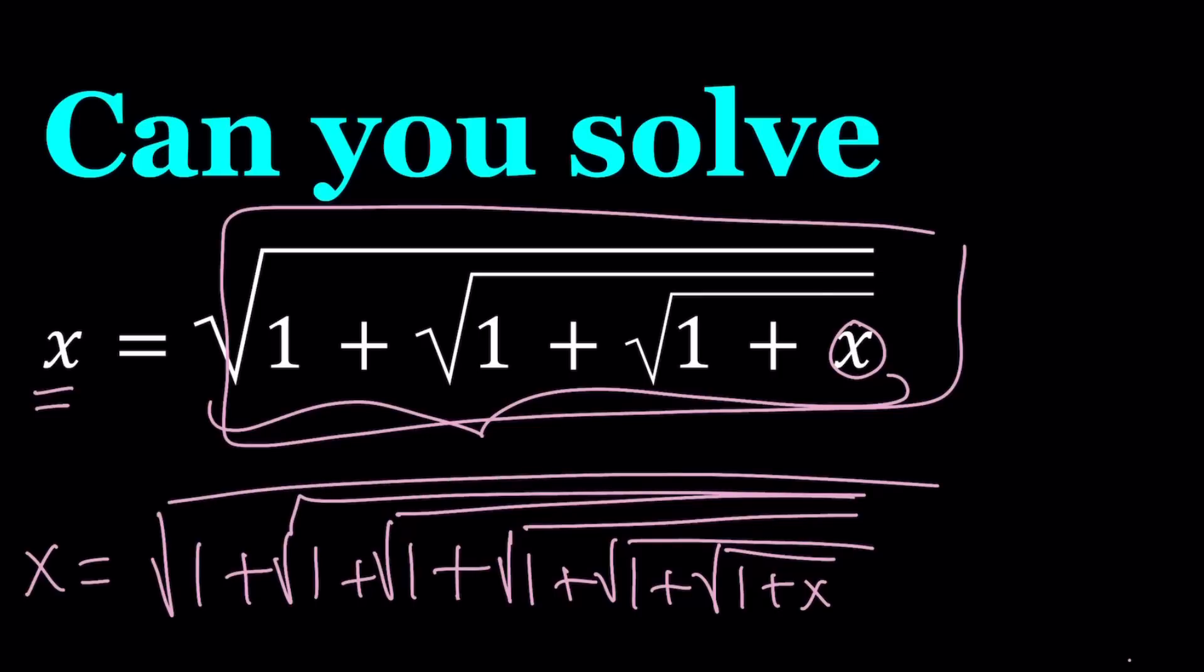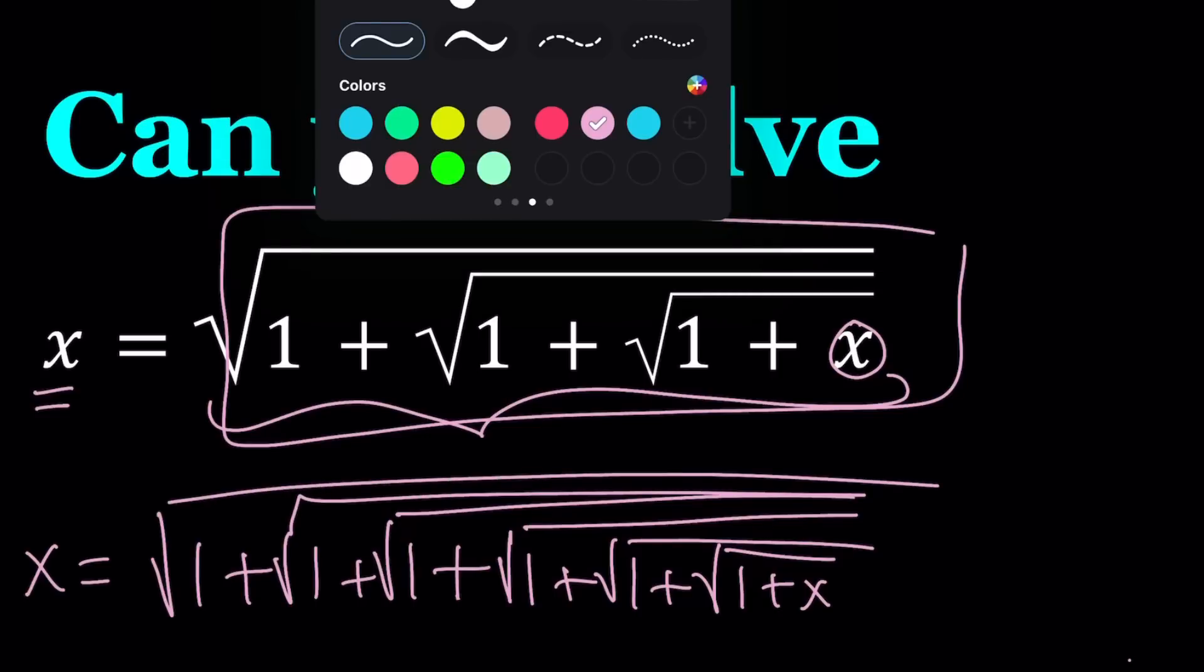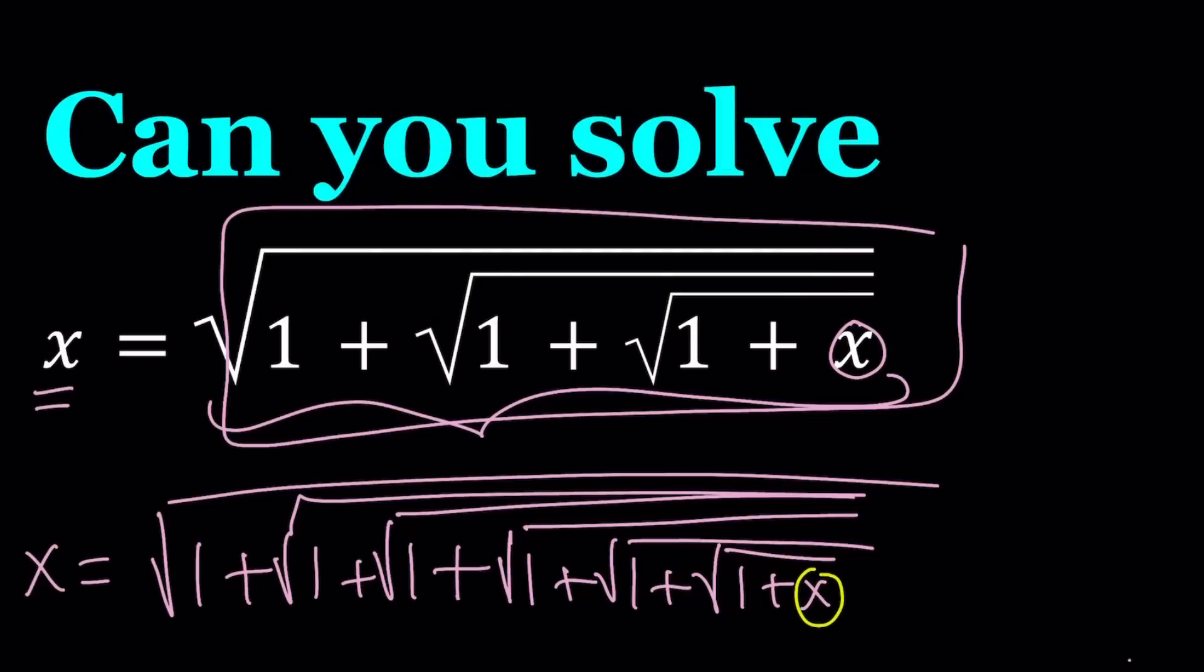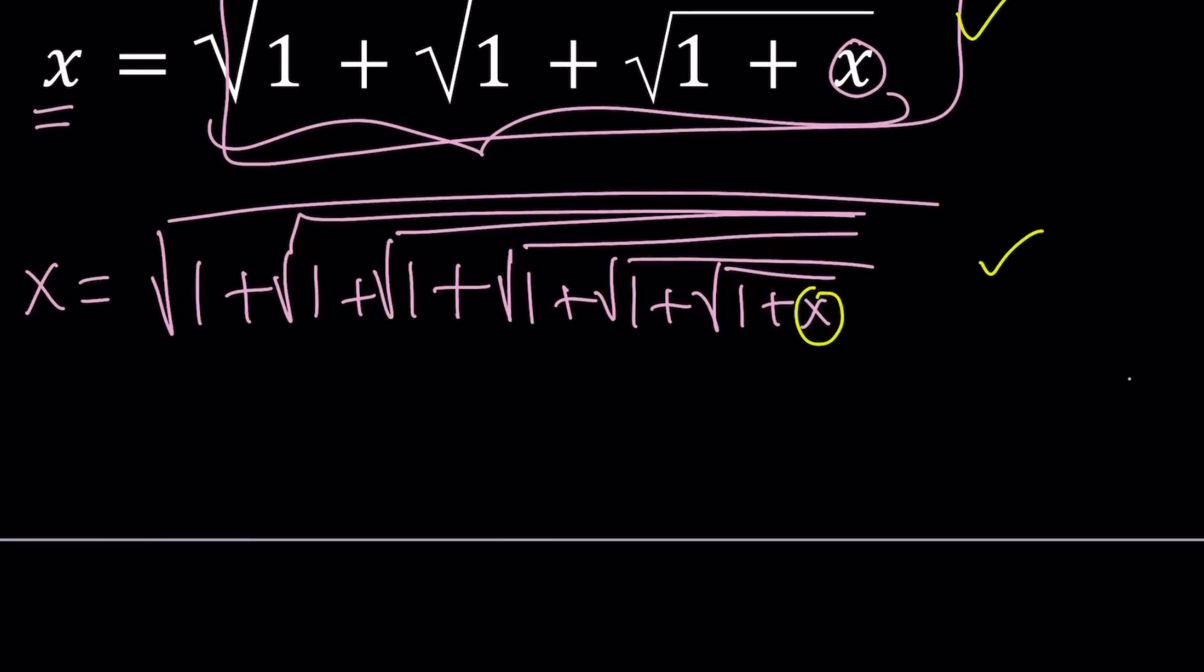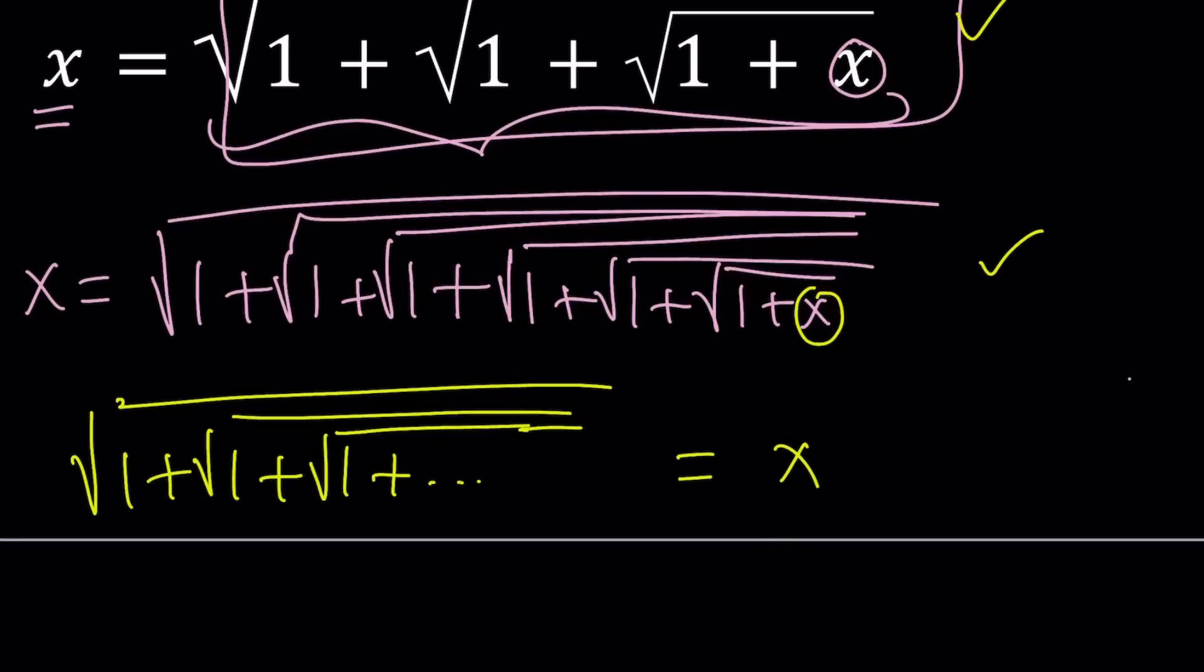So we're going to get more radicals. And if I keep doing this, like I can do it one more time, million more times, and then replacing this x with the original one, or if you want you can use this one, right? And then you're just basically going to keep getting something like this. The square root of 1 plus the square root of 1 plus the square root of 1 dot dot dot, and of course you're going to have an x at the end, right? Equals x. So how do we evaluate something like this?